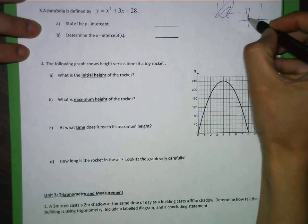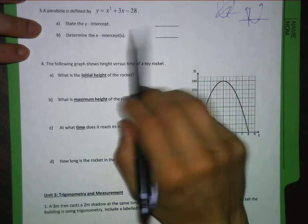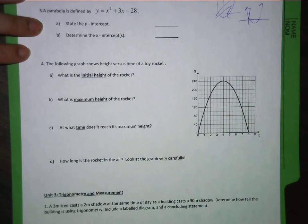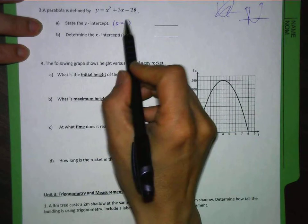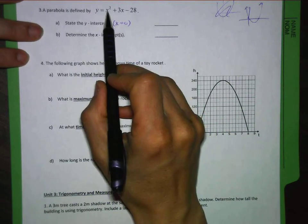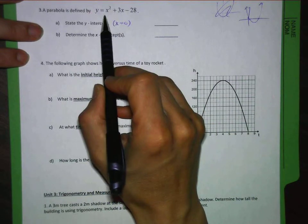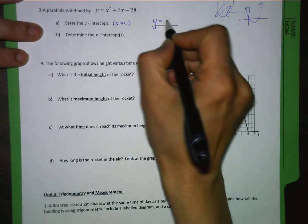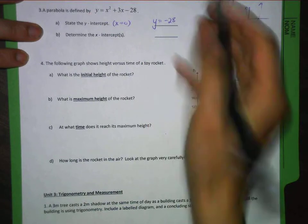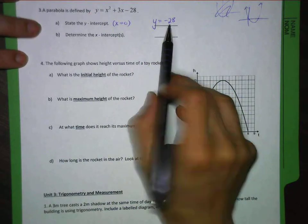We just need to state the y-intercept. So for the y-intercept, that's when x is equal to 0. So I'd sub that in. If x is equal to 0, this term would be 0, this term would be 0, and I'm just left with y is equal to negative 28. So that would be the y-intercept way down low at negative 28, it would be something way down here.